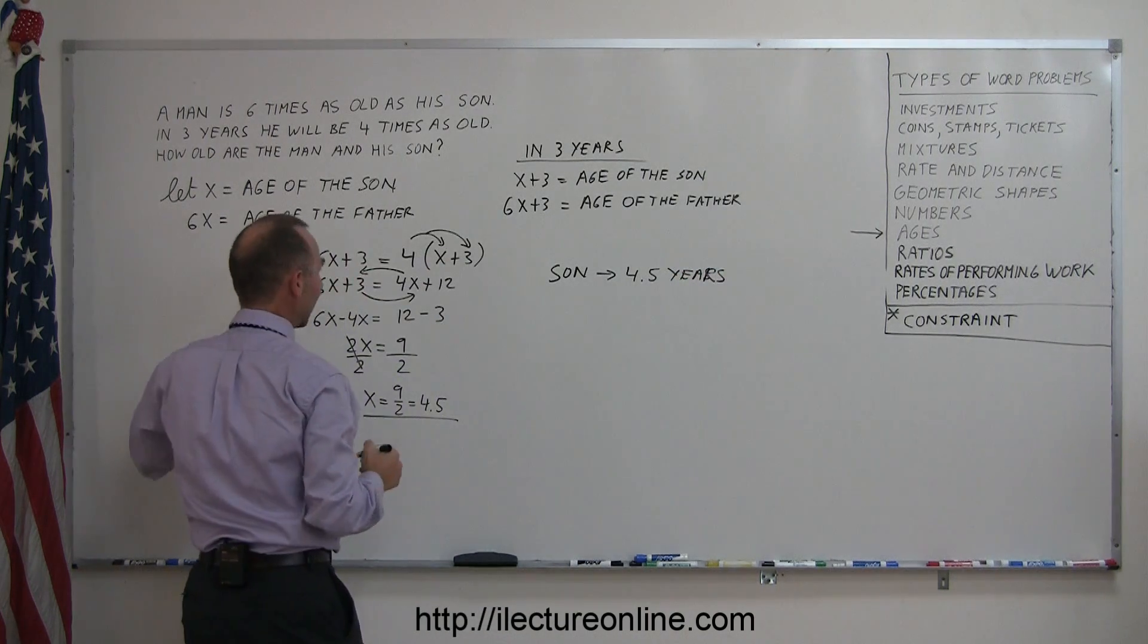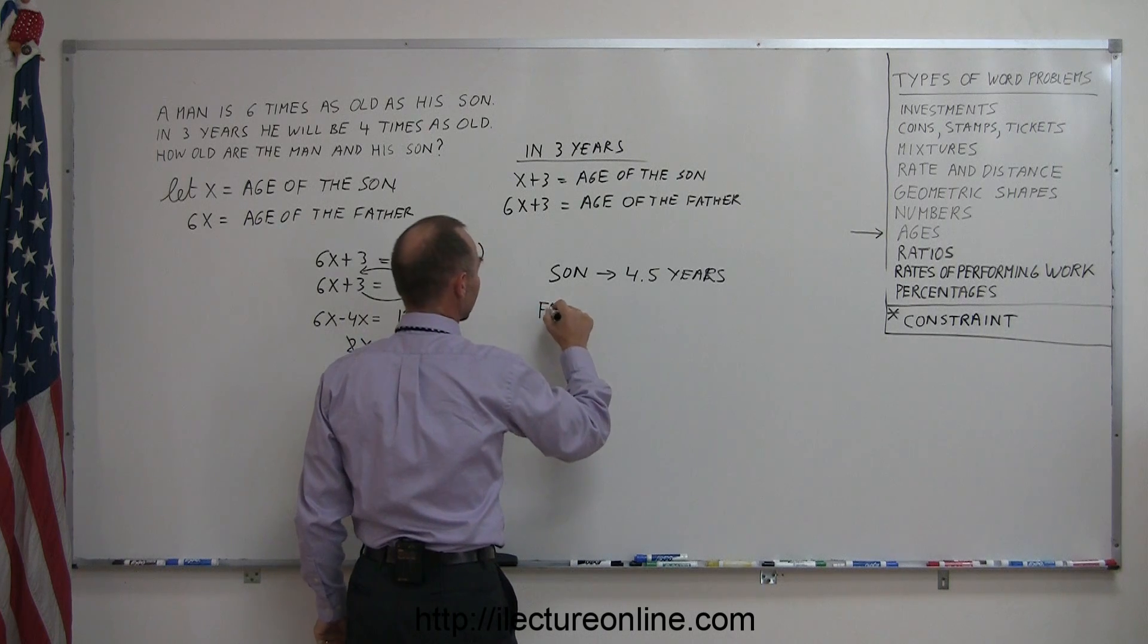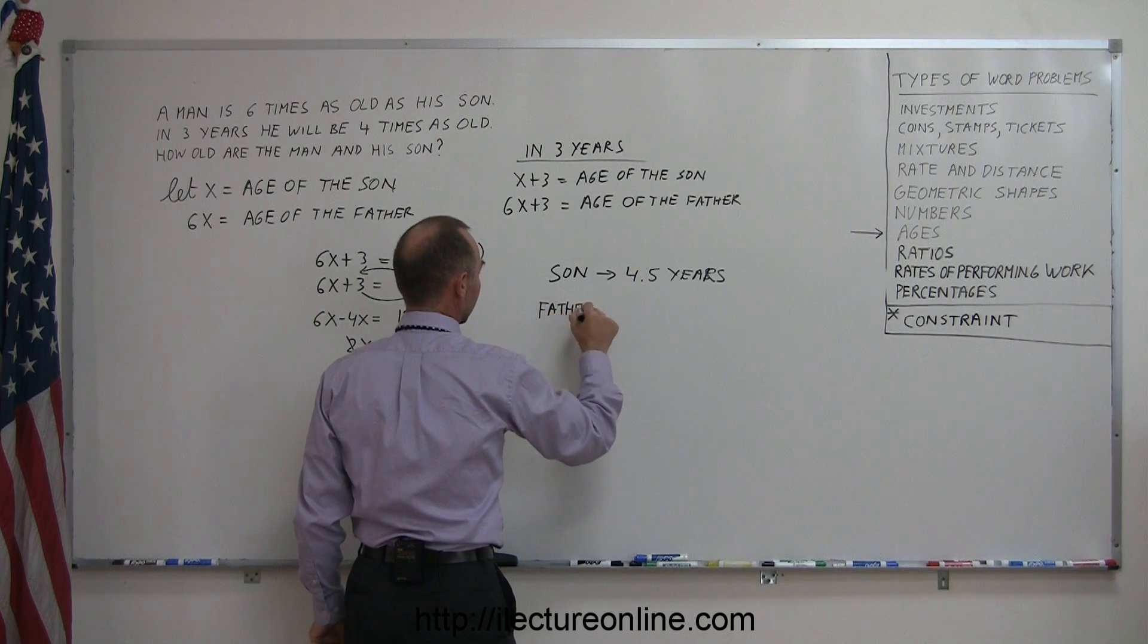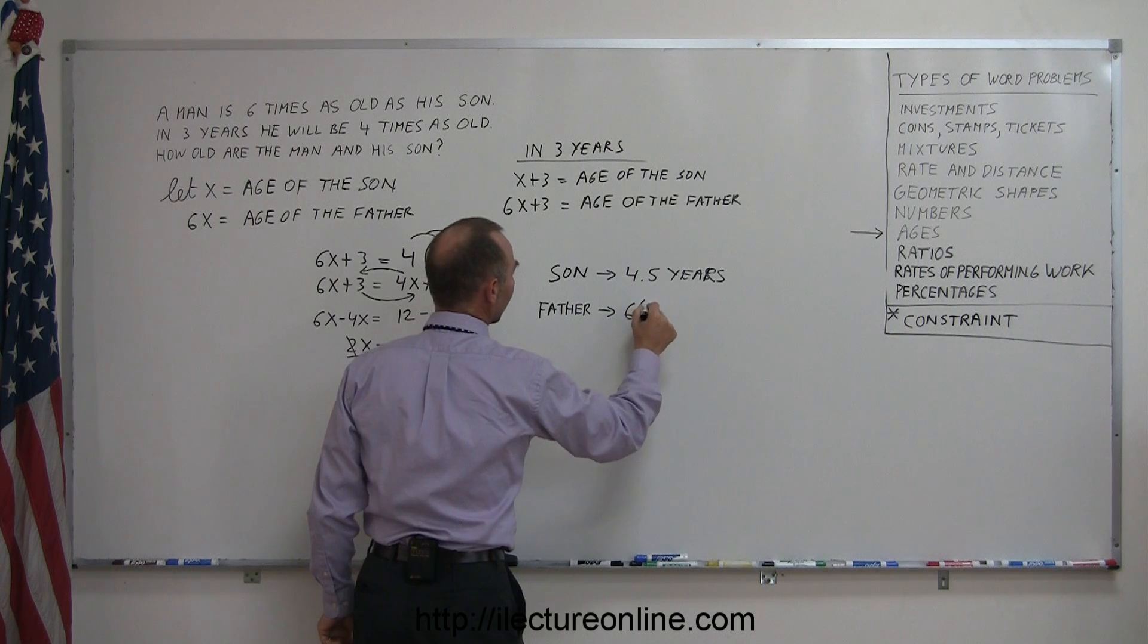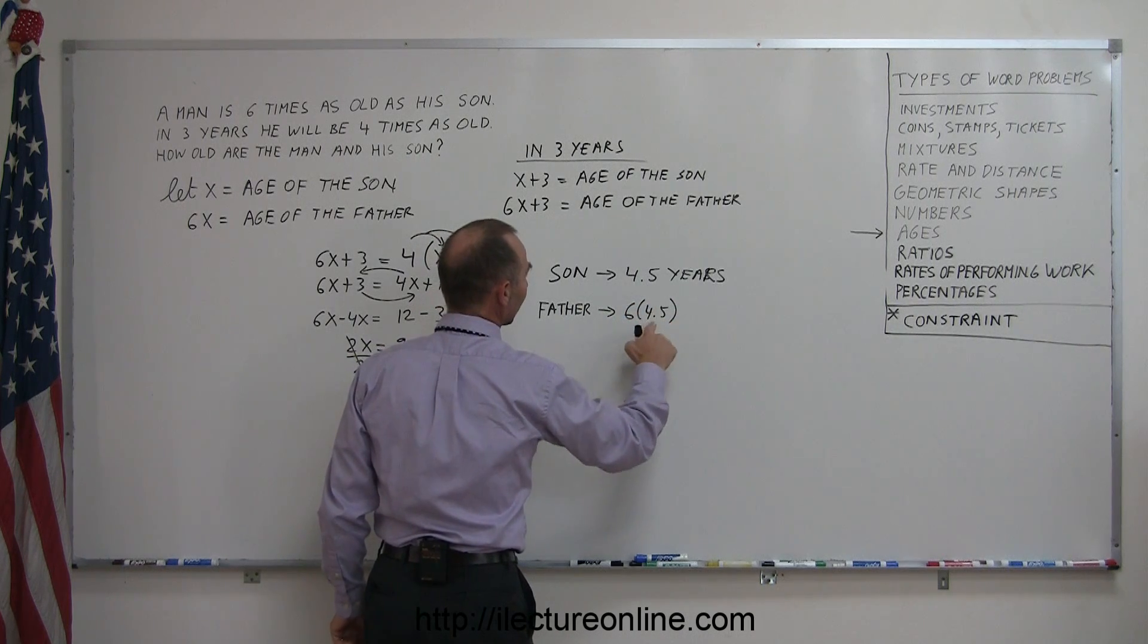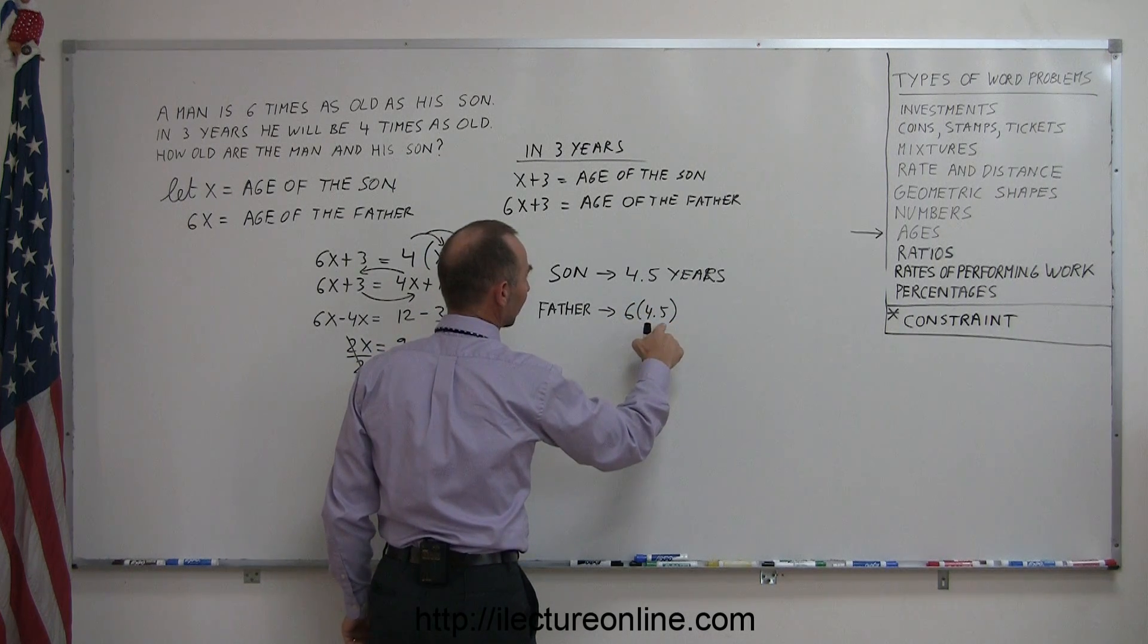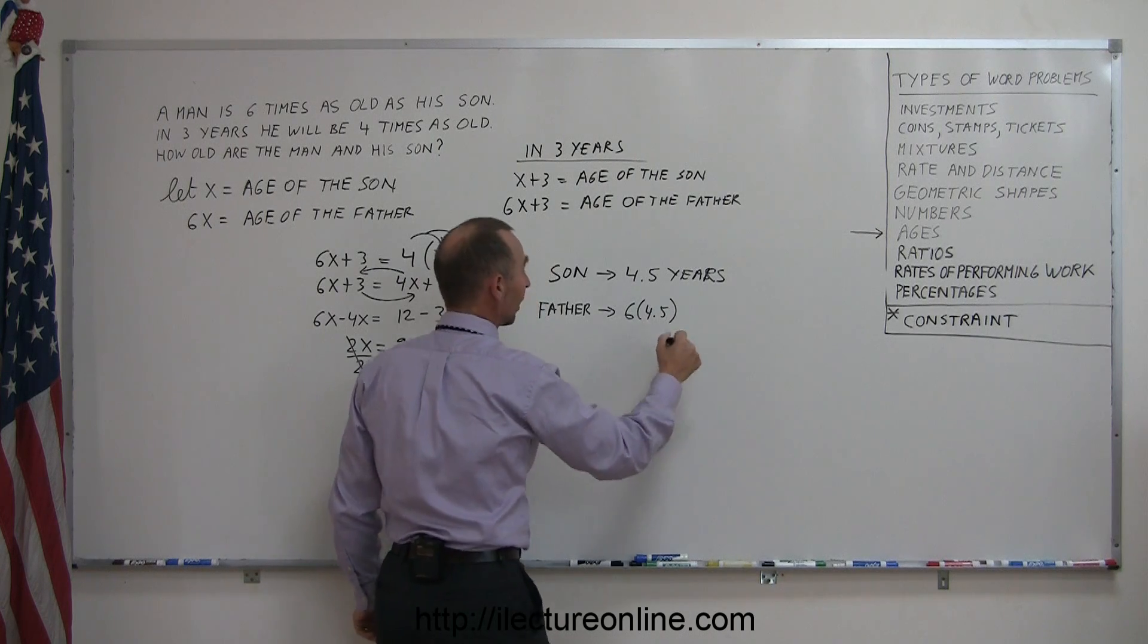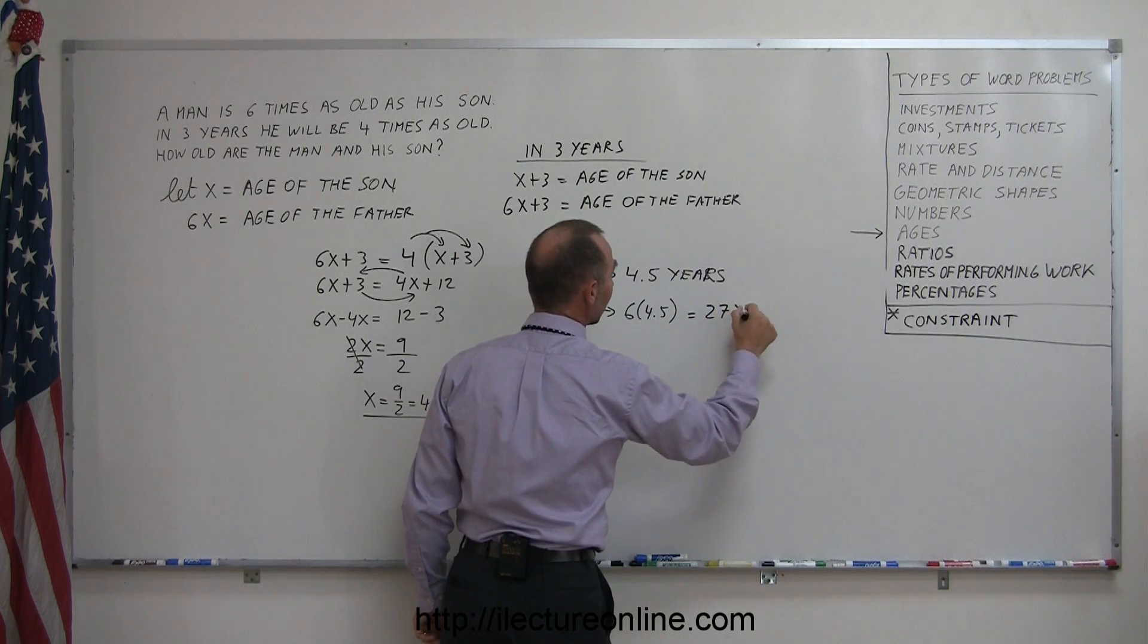And 6 times that, so the father, 6 times 4.5. 6 times 4 is 24, 6 times 0.5 is 3. So that's 27 years old.